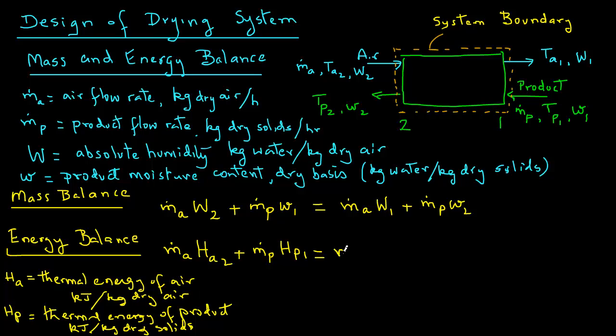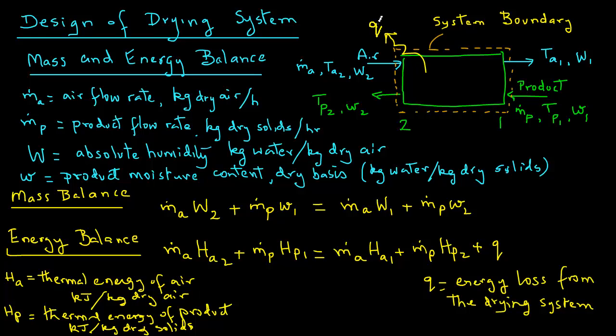That equals m_a, that is the energy leaving with the air, m_a times H_A1, plus energy leaving with the product, m_p times H_p2, plus we will add a term Q. Q is the heat loss from the dryer, because the dryer may not be insulated. We can express that with this arrow as the energy loss from the drying system.